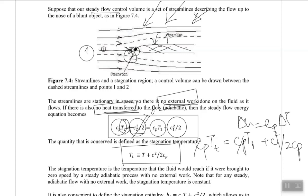The stagnation temperature is the temperature that the fluid would reach if it was brought to zero speed by a steady adiabatic process with no external work done. When the fluid hits the object at point 2, the speed becomes zero. The process was steady flow and adiabatic with no external work done. Note that for any steady adiabatic flow with no external work, the stagnation temperature is constant.